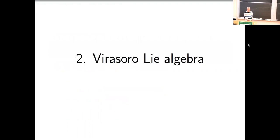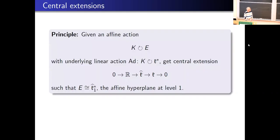I should explain what the Virasoro Lie algebra is. There are two ways of introducing it — one is to just write down the cocycle that defines it, but I prefer a coordinate-free definition. The Virasoro Lie algebra informally is the central extension of vector fields on a circle, but I'm working with an abstract circle, not a preferred coordinate. The principle I use to define the central extension is: whenever you have a Lie group K with an action on an affine vector space whose underlying linear space is the dual of the Lie algebra, and the underlying linear action is the coadjoint action — then you get a central extension of the Lie algebra such that this affine space becomes the affine hyperplane at level one.